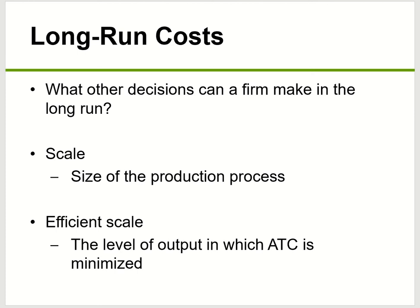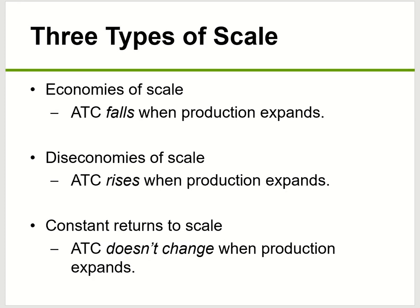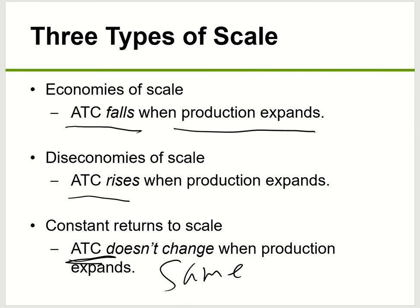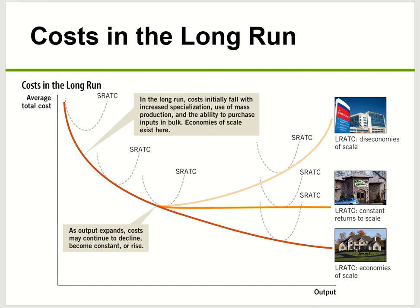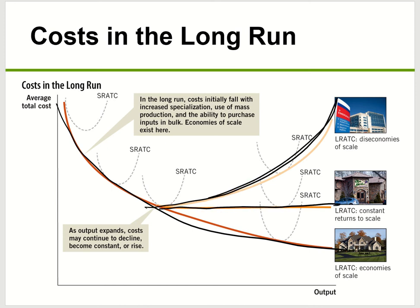Next, let's look at long-run costs. Companies' long-run costs vary depending on how big they are. There are three types: economies of scale, diseconomies of scale, and constant returns to scale. For economies of scale, the ATC will fall when production increases — the more you produce, the cheaper you get. Diseconomies of scale is the reverse: ATC will rise when production increases — the more you produce, the more cost you have. Constant returns to scale means it doesn't matter how much you produce — your ATC stays the same. If you draw the three lines: economies of scale keeps going down, constant returns to scale is flat, and diseconomies of scale goes up — there's an increase in cost.